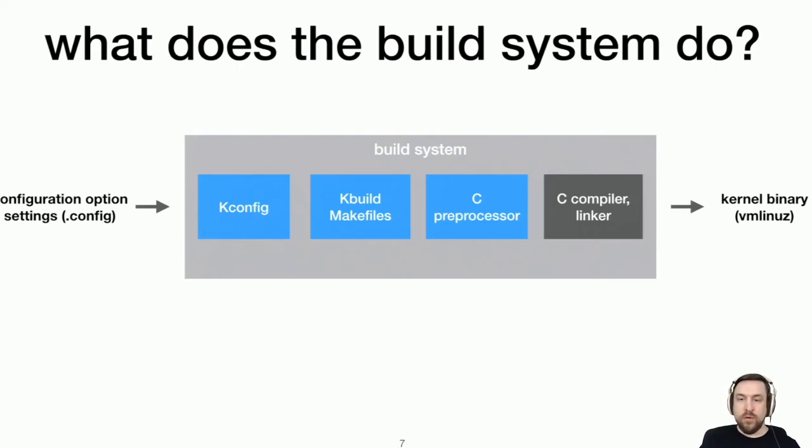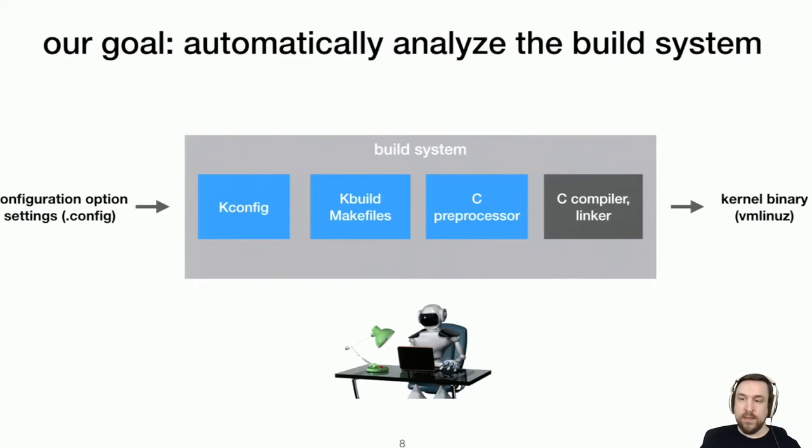And our whole goal to helping maintainers work and trace through these steps of the build system is to use automated tooling that can help automate some of these challenges. For instance, figuring out which code depends on which configuration options, automatically generating configuration options that will test changes to the code. Or, in the case that we'll see today, find some kinds of bugs that are in the build system itself that are specific to certain combinations of options.